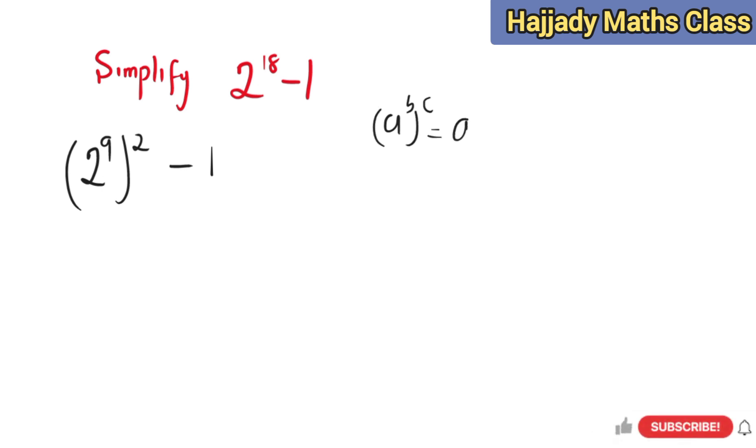And when we have this, we can possibly use difference of two squares by saying 1 raised to the power 2, which is still the same thing as the expression we have previously. So using the method of difference of two squares, we can say that this is the same thing as 2 raised to the power 9 plus 1, times 2 raised to the power 9 minus 1.